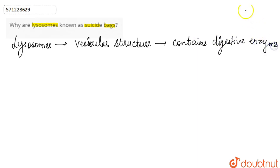So basically first of all we'll discuss what are lysosomes. Lysosomes are the vesicular structures that contain digestive enzymes. Lysosome contains the digestive enzymes.